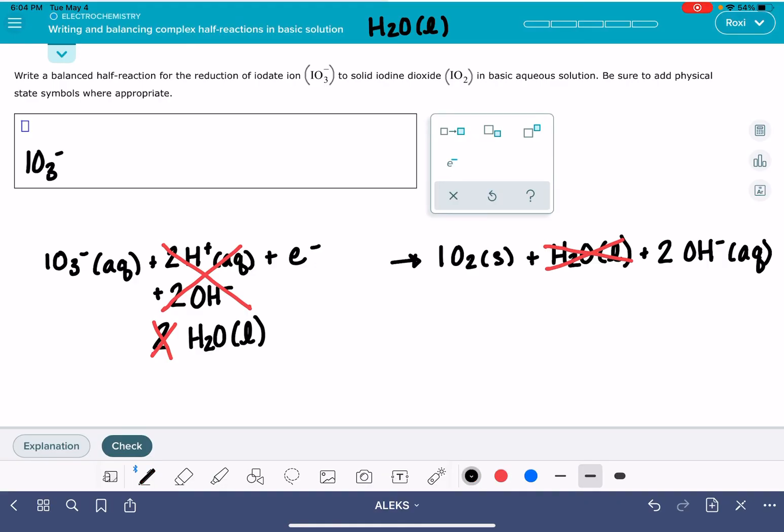What we're left with is IO3- aqueous, H2O liquid, one electron. And ALEKS has got this button for you to enter the electron in. And that goes to IO2 solid and 2OH- aqueous.